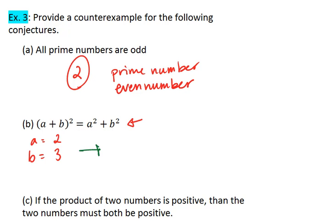Alright, plugging these values in, we get 2 plus 3 squared equals 2 squared plus 3 squared. Order of operations tells us that on the left hand side, we deal with parentheses first. Meaning we have 5 squared.